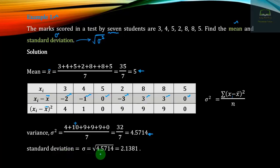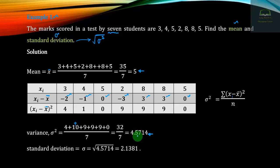The square root of sigma squared gives us the standard deviation. We take the square root of 4.557, which gives sigma. The standard deviation result is approximately 2.138. This answers the first question. The result is 2.138, which is the standard deviation for this dataset.